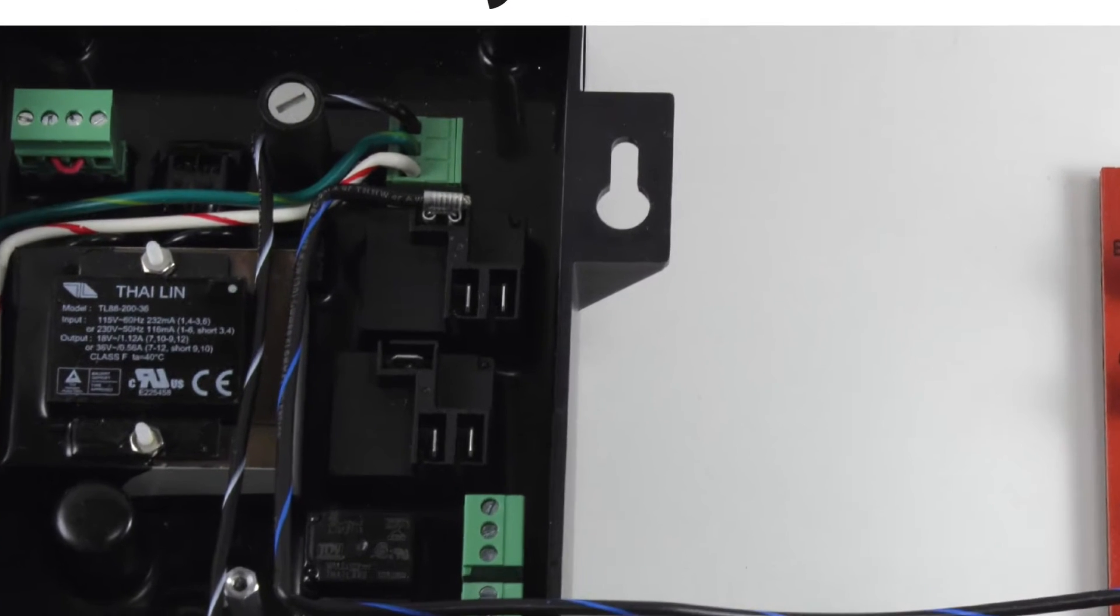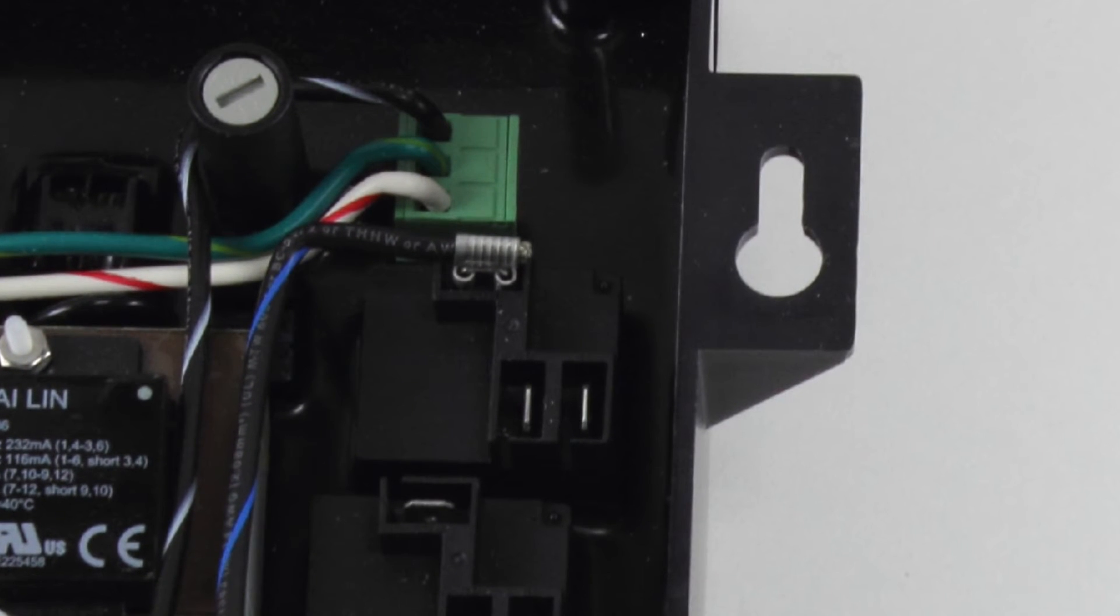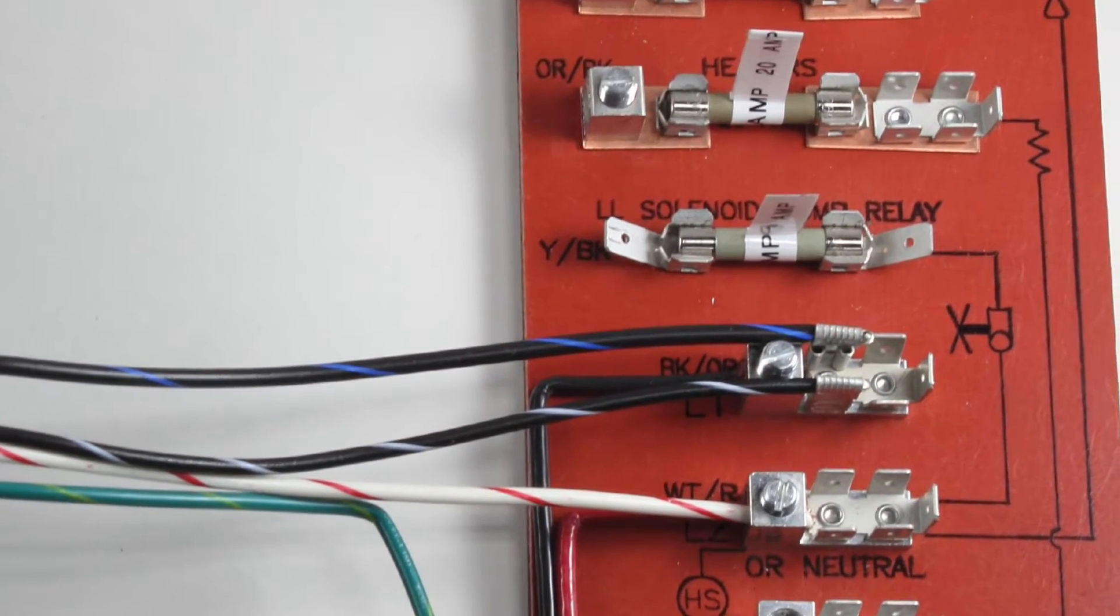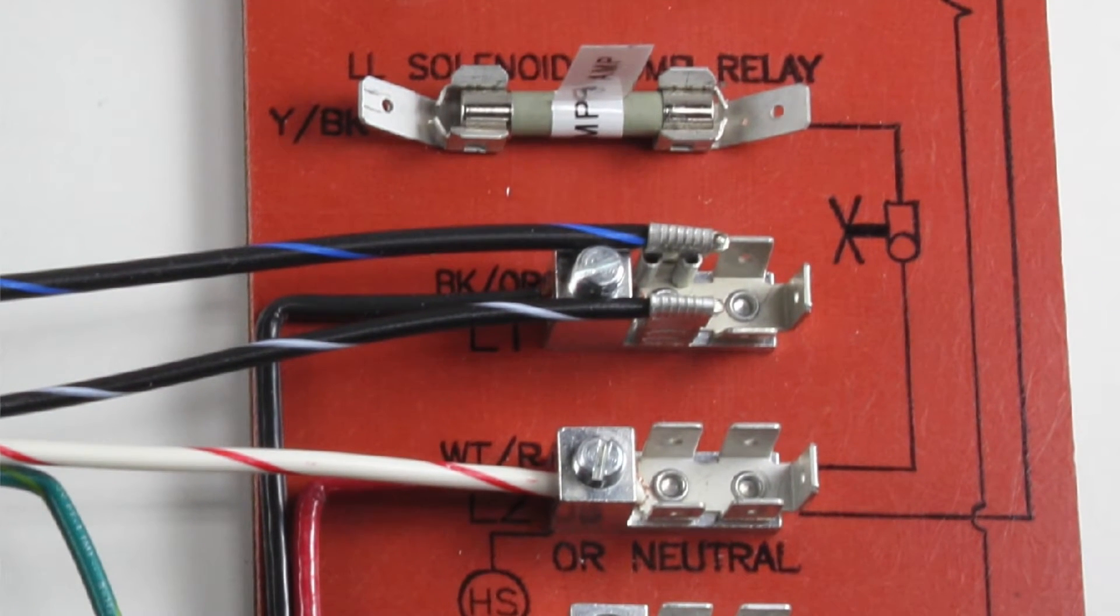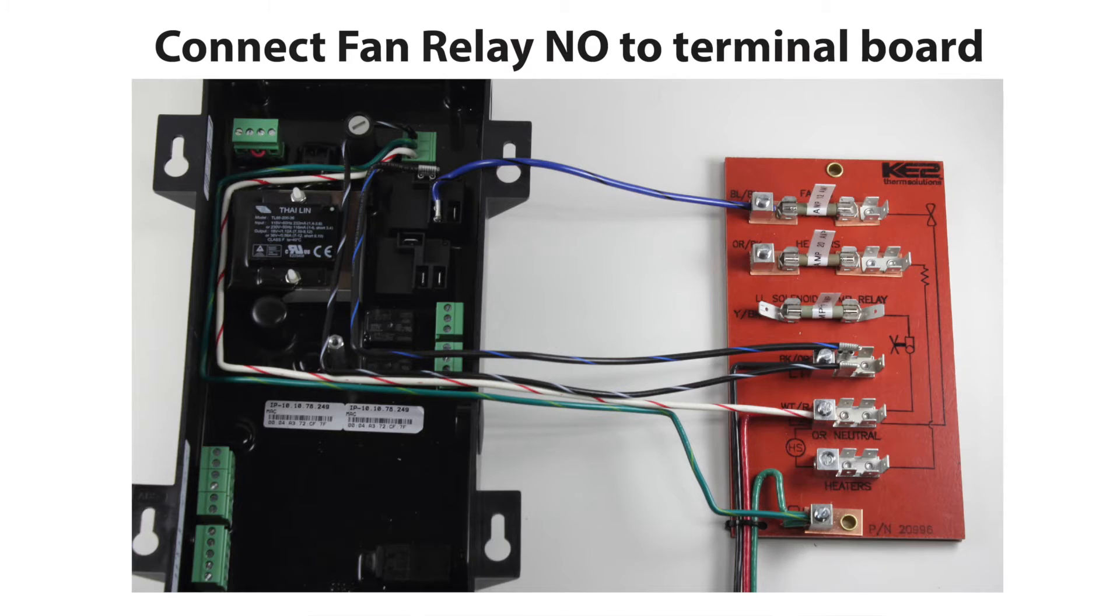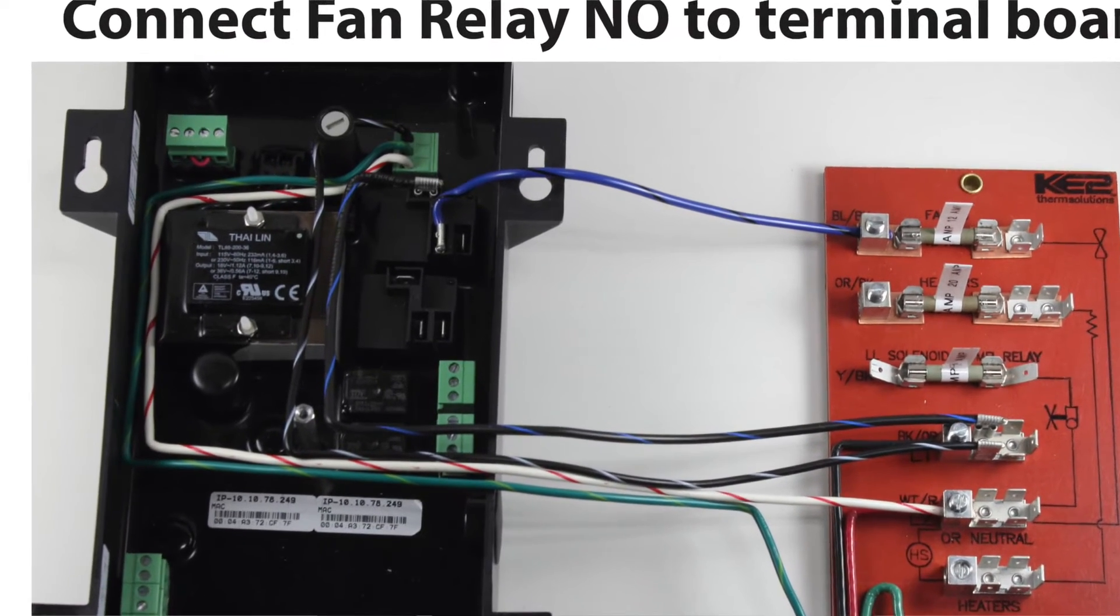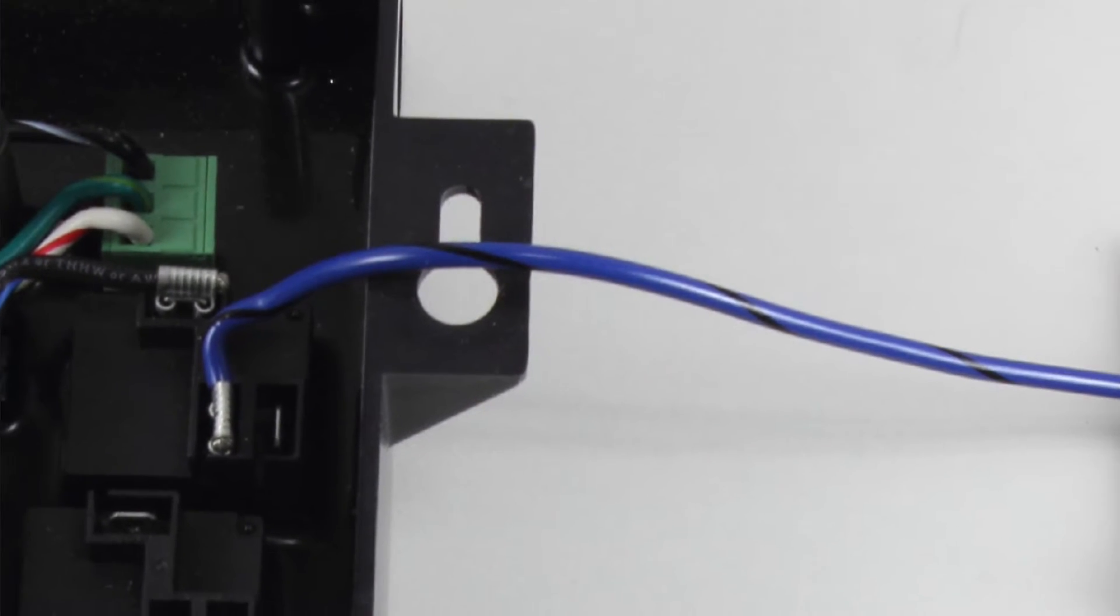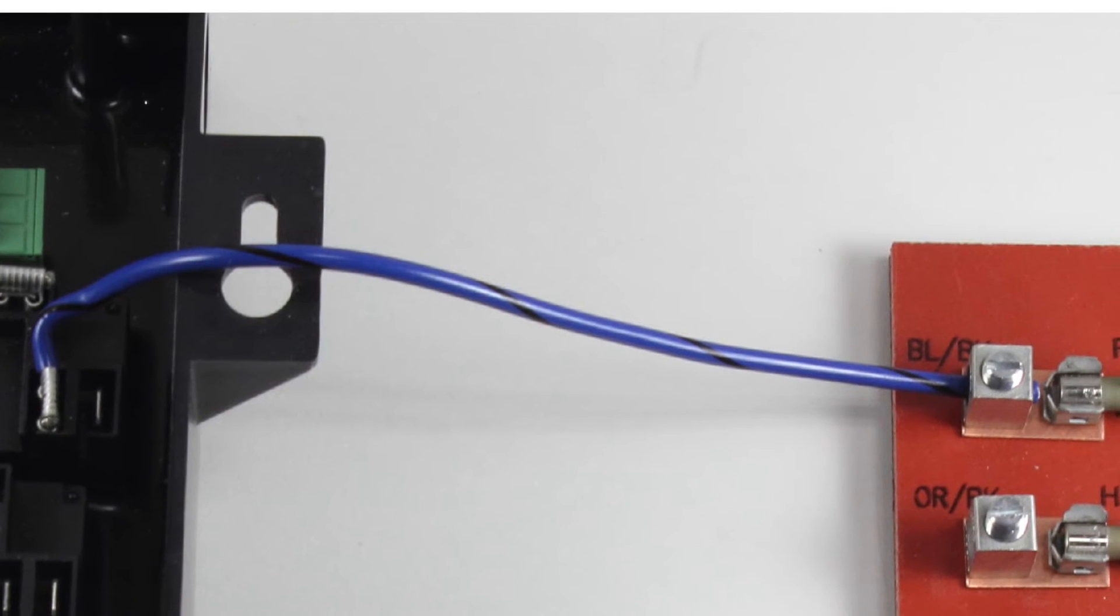Next, the fan relay dry contact needs power provided to the common terminal. Connect the line 1 on the terminal board using the black with blue stripe. Wire the common on the fan relay as shown. Connect from the fan relay on the normally open set of contacts using the blue with black stripe. Wire to the blue-black location as shown on the terminal board.